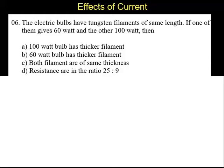Question number 6. The electric bulbs have tungsten filament of same length. If one of them gives 60 watt and the other has 100 watt, then: A. 100 watt bulb has thicker filament. B. 60 watt bulb has thicker filament. C. Both filament of same thickness and D. resistances are in the ratio 25 is to 9.